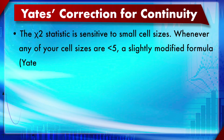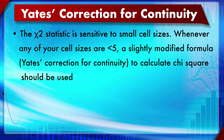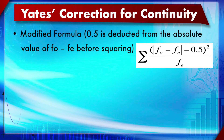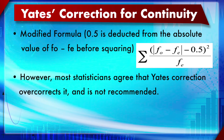There is an important correction: the chi-square test statistic is sensitive to small cell sizes. Whenever any cell size is less than 5, a modified equation called Yates' correction for continuity can be used. The only difference is that the numerator becomes (|FO − FE| − 0.5)² instead of (FO − FE)². However, most statisticians agree that Yates' correction over-corrects and is therefore not recommended.